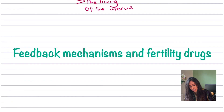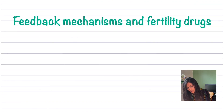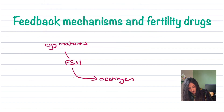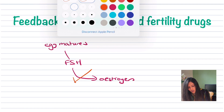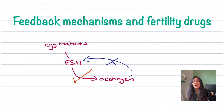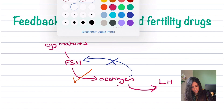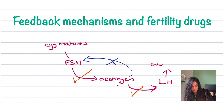Let's simplify this even further with a feedback mechanism. FSH causes egg maturing and causes oestrogen to be released — tick. But oestrogen also stops FSH from being released — shown with a cross. When oestrogen is released, it causes LH to be released — tick. And LH causes ovulation on day 14. That's a really simplified way to see the feedback diagram.